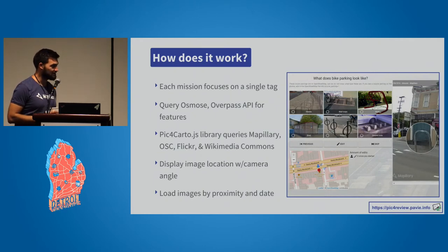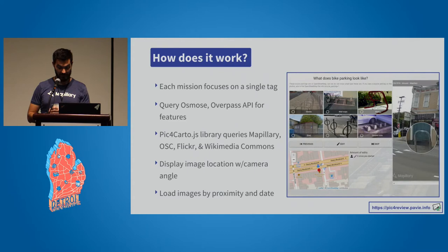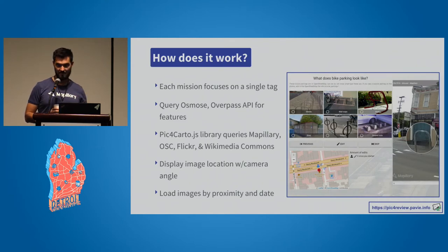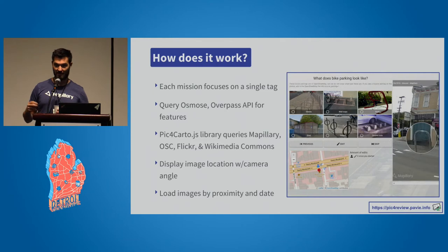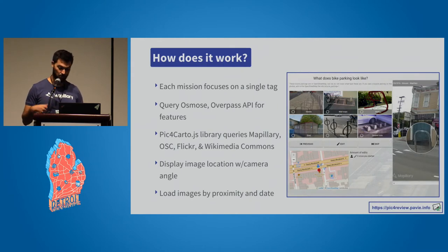The way this tool works is it's based on missions. By creating a mission, you choose a specific focus area. The example shown is bicycle parking, asking what bicycle parking looks like in a specific area on the map, having found an existing feature. It queries the Overpass API, finding that feature because you set up a mission looking for bicycle parking. In other cases, you can also use Osmos to look up things that need specific fixes. The Pic for Carto.js library keeps the APIs from these different imagery services, and when fed longitude and latitude it displays nearby images — often with the camera angle actually facing toward what you want to review. Pictures load in order of proximity as well as date, so you get the freshest and closest imagery.